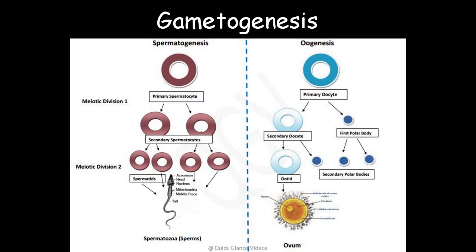Comparing spermatogenesis and oogenesis: in spermatogenesis, primary spermatocytes undergo meiotic reduction to give two secondary spermatocytes, then four spermatids, which become sperms. In oogenesis, primary oocytes produce a secondary oocyte and a first polar body; the second meiotic division produces an ootid and two more polar bodies; the three smaller polar bodies degenerate, and the ootid converts into the ovum or egg.